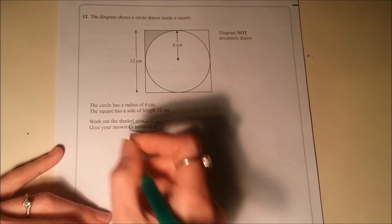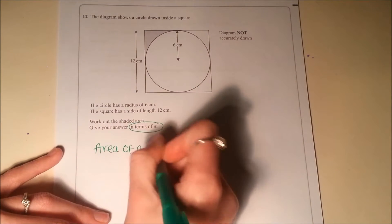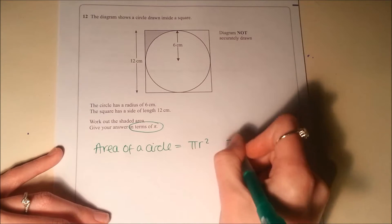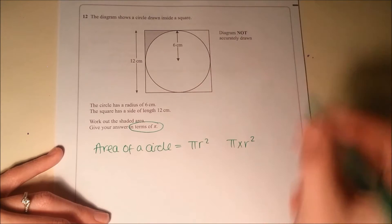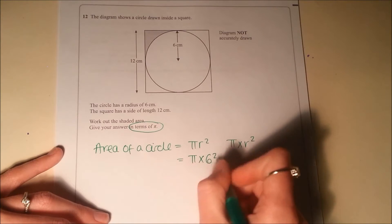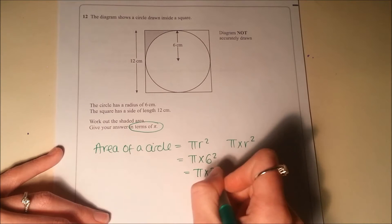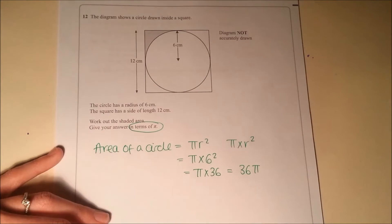So, first of all, what do we know? Well, we know the area of a circle is πr², so pi times the radius squared. In this question, we can see the radius is 6, so we can replace r squared with pi times 6 squared, and we can work out that 6 squared is 36, so we can write that as pi times 36, or it's more usual to write it like that, 36π.